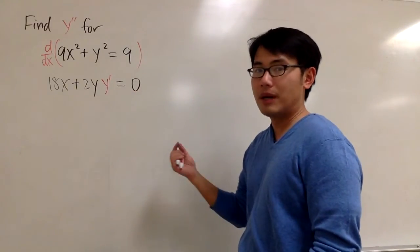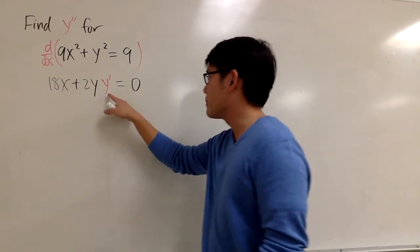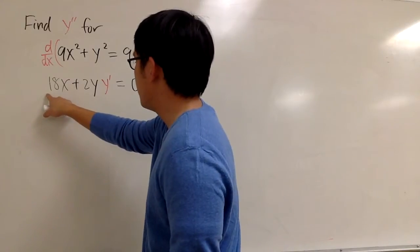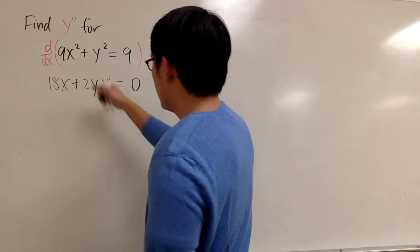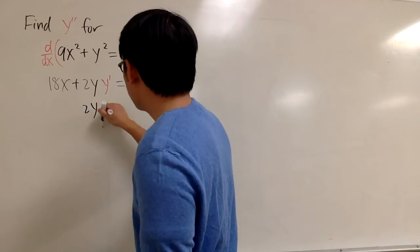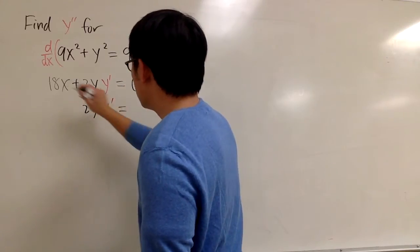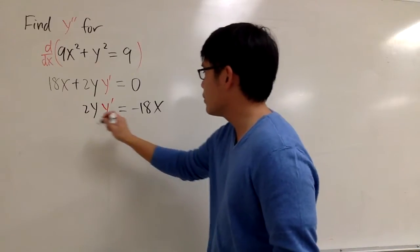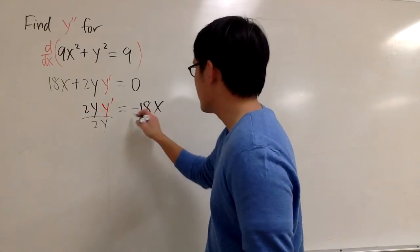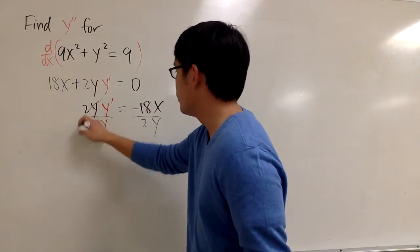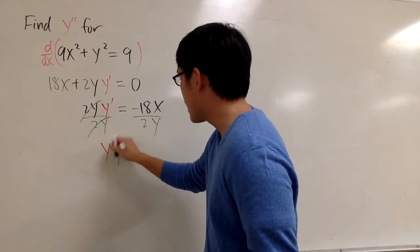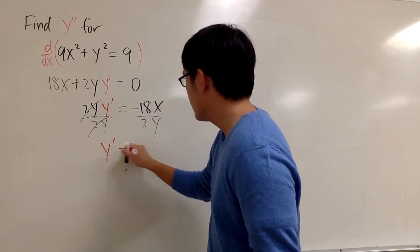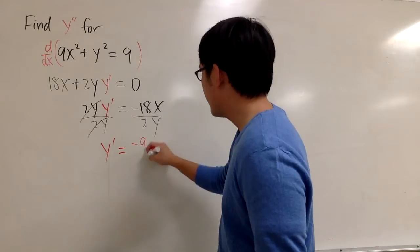And this is pretty much it. But let's isolate the y'. To do that, we can just bring the 18x to the right-hand side. Here we have 2y times y', that will give us negative 18x. And we can also divide by 2y on both sides. This way the 2y cancels, and I get y' is equal to negative 9x over y.